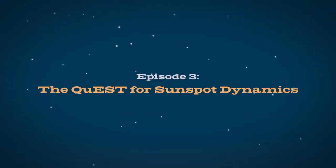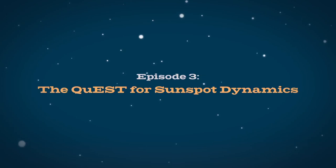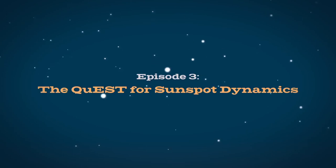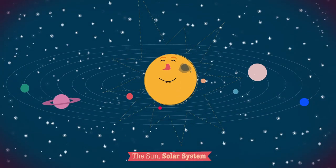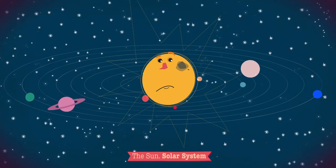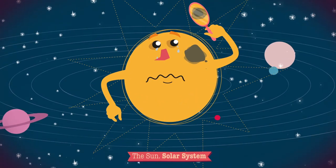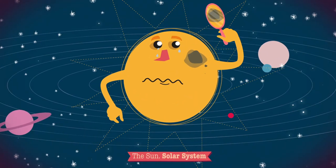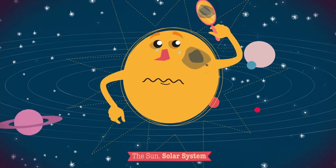Folge 3: Der Dynamik von Sonnenflecken auf der Spur. Sonnenflecke, die auf der Oberfläche der Sonne zu sehen sind, bestehen aus zwei Teilen: aus der dunklen Umbra in der Mitte und einem helleren Kranz um sie herum, genannt Penumbra.